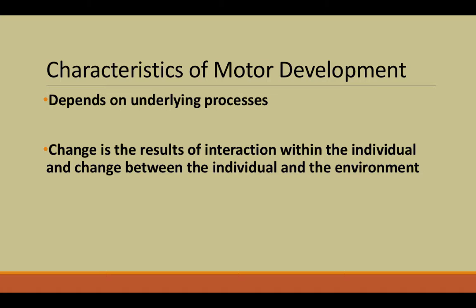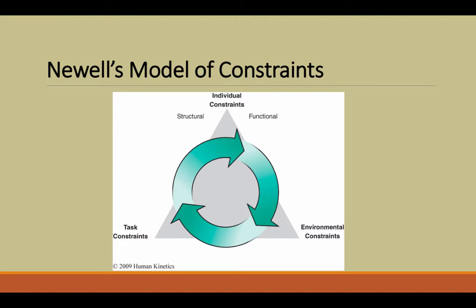Motor development really depends on many underlying processes taking place in the body. Change is a result of interactions within the individual and between the individual and the environment. Both of these factors come together and affect development. A fundamental theory that explains how the environment, the individual, and the task all interact with one another is Newell's model of constraints, which serves as the foundation upon which we build the rest of this course.